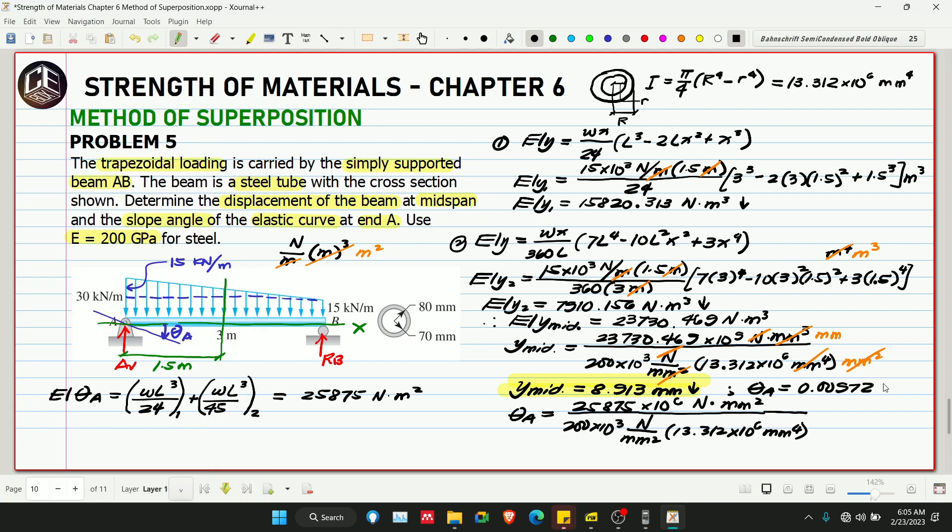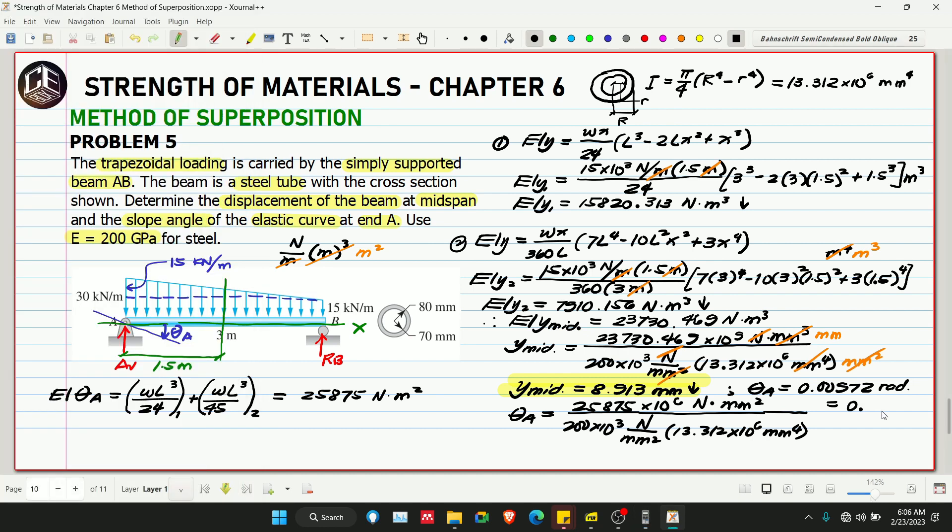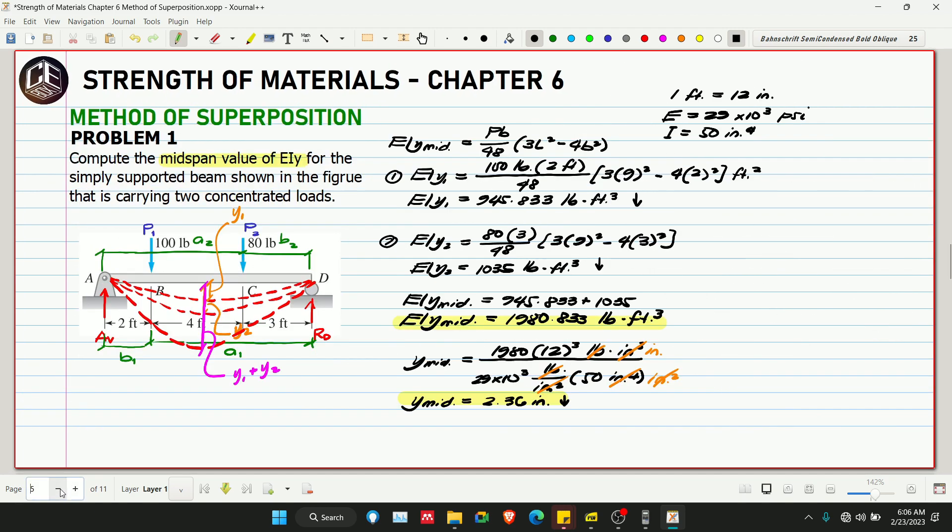We can convert this to degrees by multiplying by 180 degrees over pi, which gives 0.557 degrees. The rotation based on this is clockwise. Now, if you don't understand the table well, it's possible to make mistakes. The triangular load equation - it's possible you might pick the wrong equation. Our equation is this because the support at B in our given formula corresponds to support at A where the triangular load height is located.